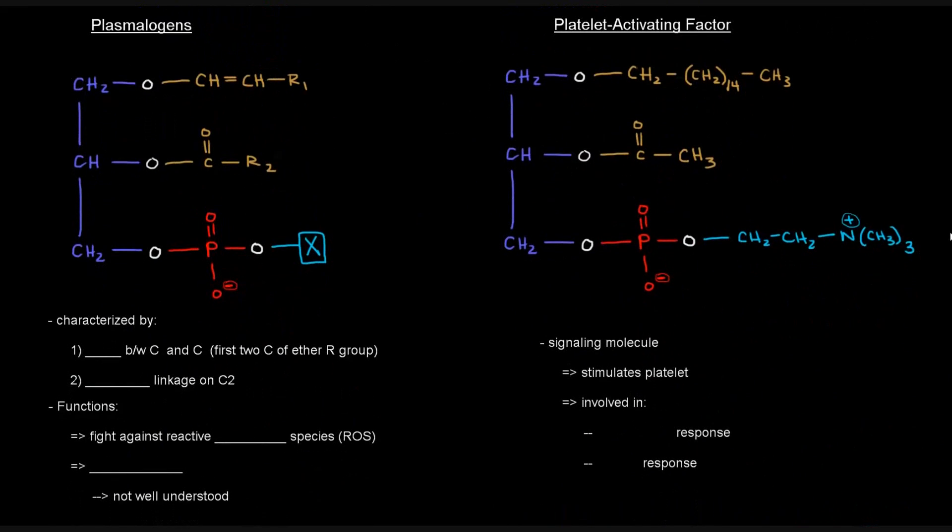Now there are two examples that I want to talk about. There are these things called plasmalogens and there's the specific glycerophospholipid with an ether linkage called platelet activating factor that I'll get to in a moment. So plasmalogens look like this. They're characterized by having a carbon-carbon double bond between carbon A and carbon B, which are basically the first two carbons on the ether R group. So if we think about the R group up here from the ether, these first two carbons, carbon A and carbon B, are the first two carbons of that R group. So if it's a double bond there, that's one of the characteristics of a plasmalogen.